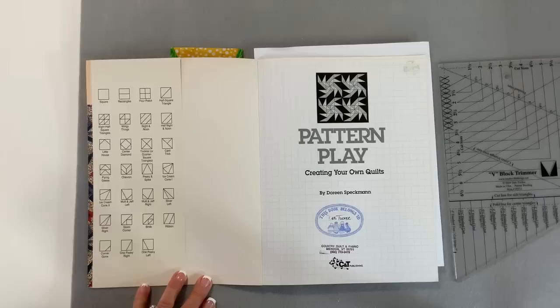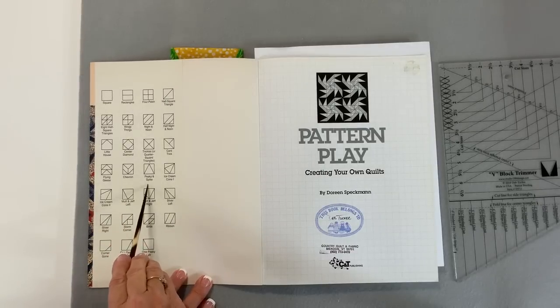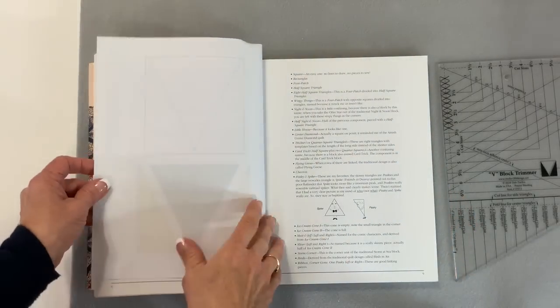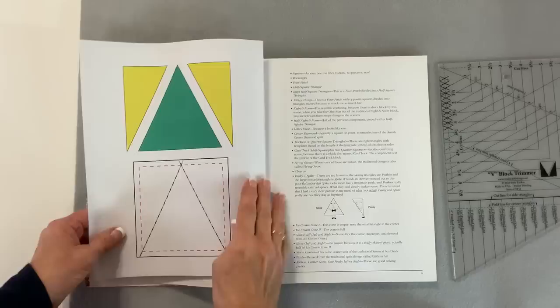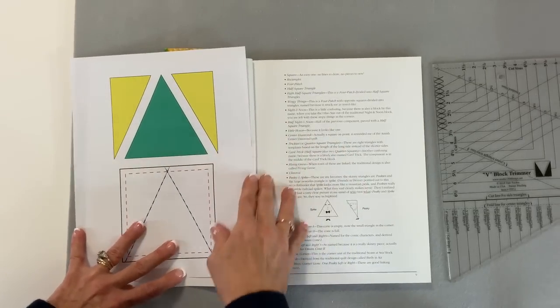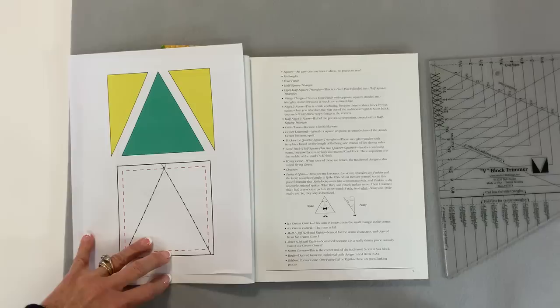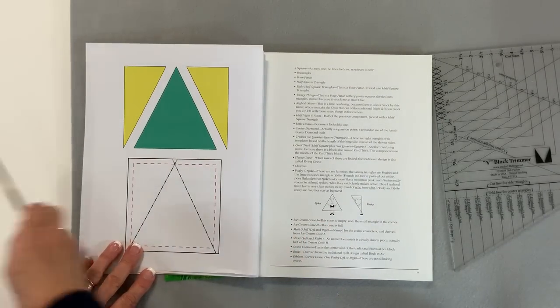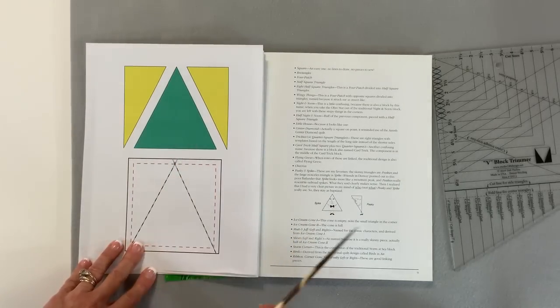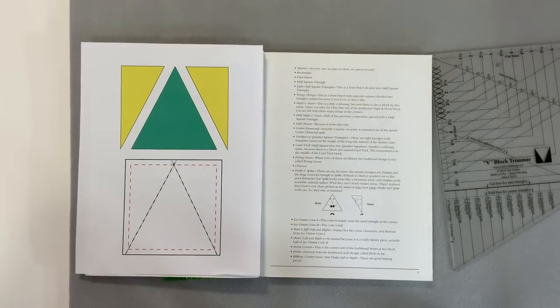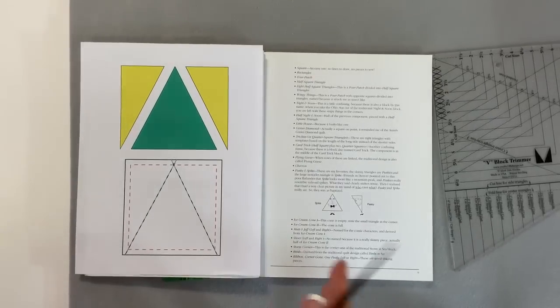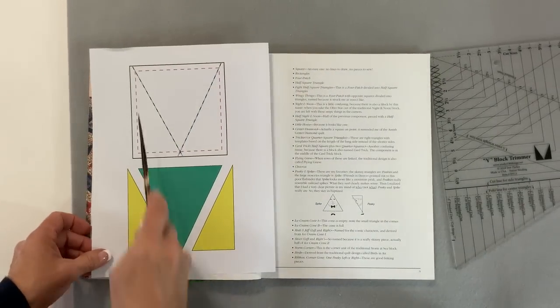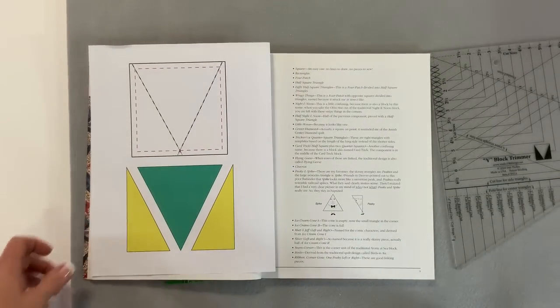The shape that we're talking about today is this shape that's right here and she calls that shape Peaky and Spike. And you're thinking, well, why is it called Peaky and Spike? Well, when you look at her description of the shape, what you're going to see is she simply named the triangles that are associated with the building of this unit. Remember, this is a square that has a center and two side triangles. She named that center triangle Spike and she named the two side triangles Peaky. And she just did that so that she could easily identify these in her books and in her instructions. Me, I named this unit a V block because when you see that unit, it looks like there's a letter V inside the square.